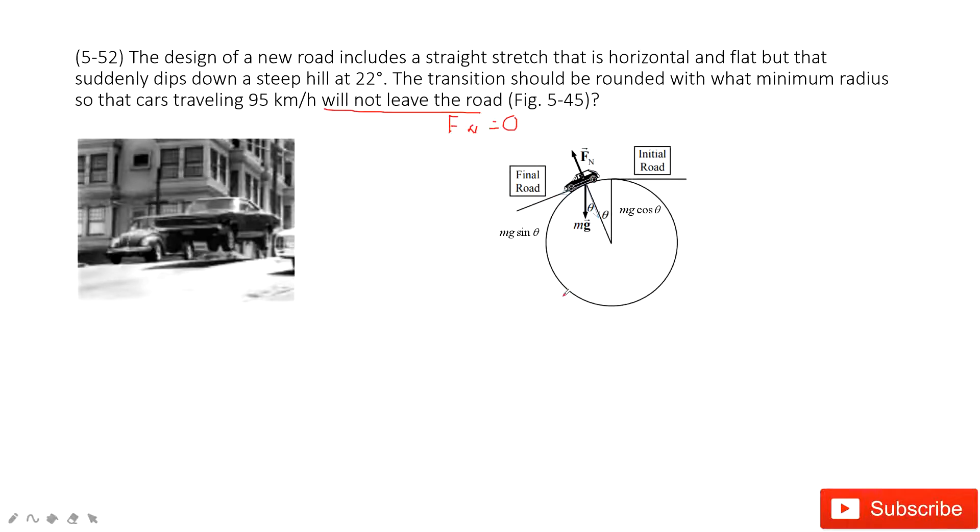In this one, we can write Newton's second law. The central force is mg cosine theta minus normal force equal to the mass times the central acceleration.